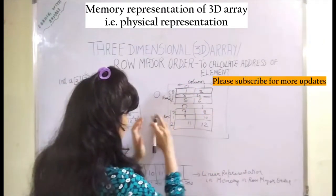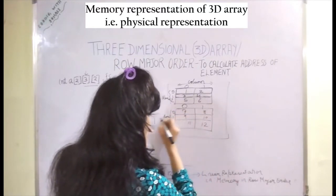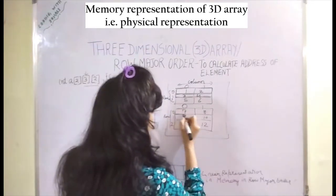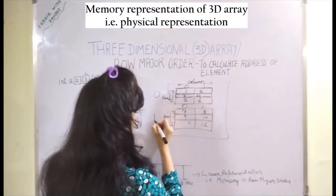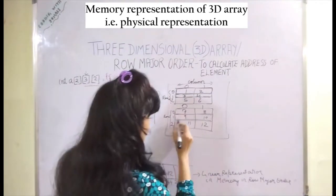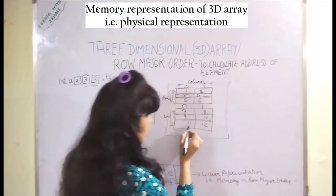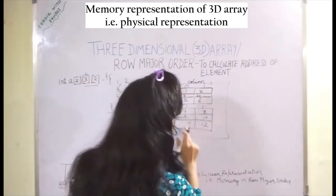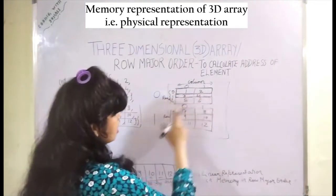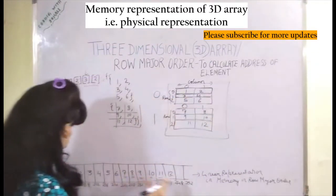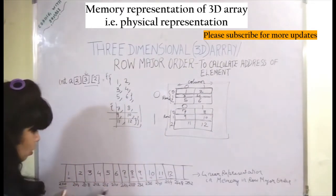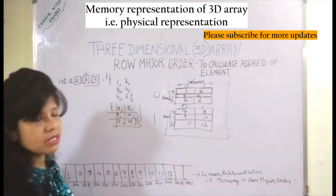After the zeroth element is filled, the first element is filled row-wise. The 0th row of the first element has values 7 and 8, the first row has 9 and 10, and the second row has 11 and 12. This is why it is called row major order — because it stores elements in row form, filling memory row-wise. All elements are in contiguous memory locations with a distance of 4 bytes.